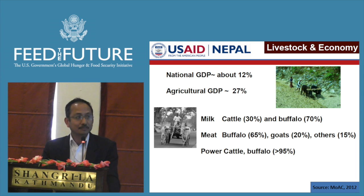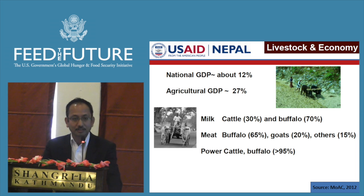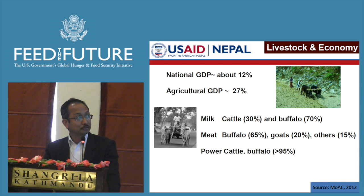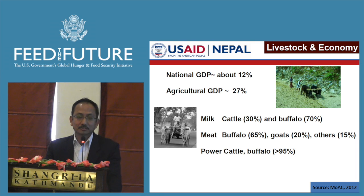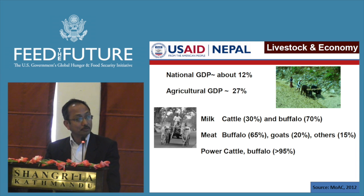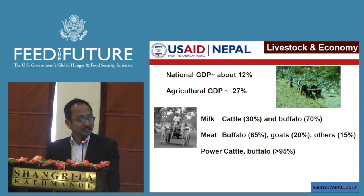Talking about some government statistics on livestock in Nepal: livestock is one of the crucial subsectors in agriculture. Livestock contributes about 12% to national GDP, and if we talk about agricultural GDP, 27% is contributed by livestock alone. In terms of milk production annually in Nepal, buffalo contributes 70%, with the remainder raised by cattle. In terms of meat, buffalo contributes the highest at 65%, with the remaining from goats and poultry.